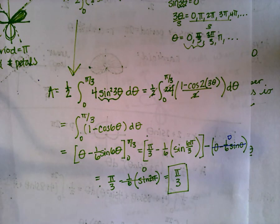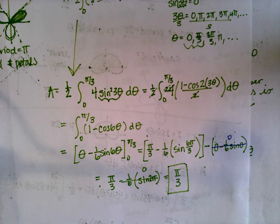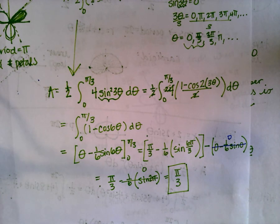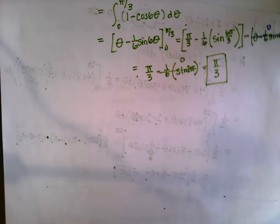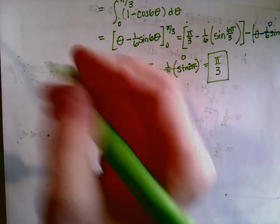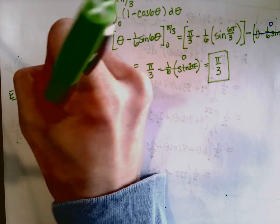That's how you find the area of one petal. A child has joined, so she's going to color while I do the last example. Our last example for today — we'll do more complicated ones when I get back Friday.